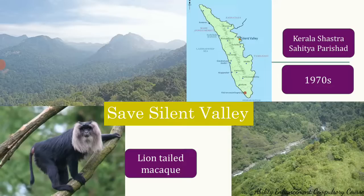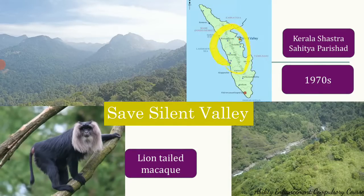The mascot of the entire movement became the lion-tailed macaque, an endangered primate endemic to the Western Ghats region. Because this area was pristine and untouched, a large number of lion-tailed macaques were present there. With pressure from environmentalists, international media, conservationists, and authors, Prime Minister Indira Gandhi declared the area a national park and the project was completely called off in 1983.